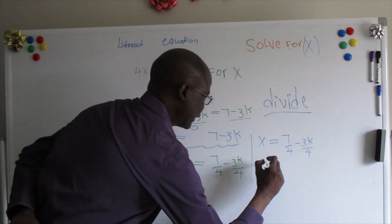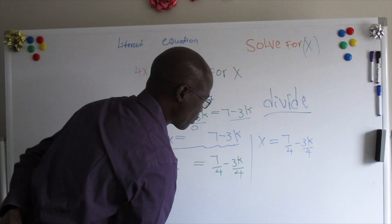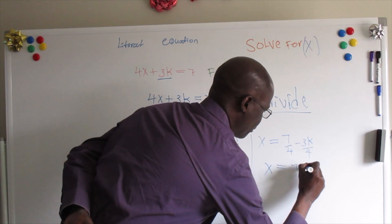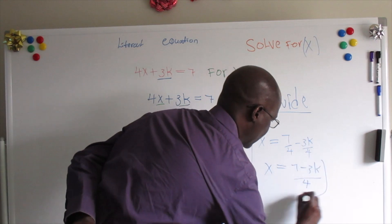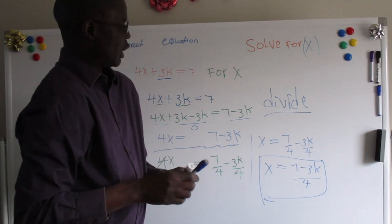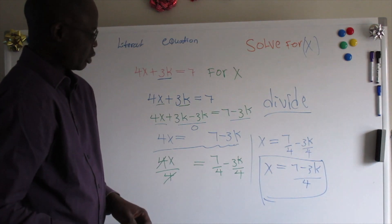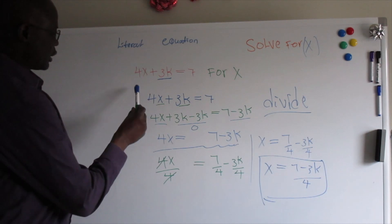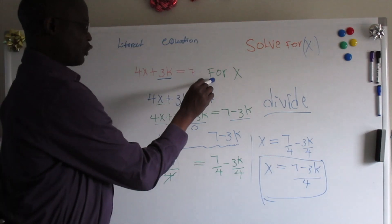We can simplify this to make it x equals 7 minus 3k, the whole thing divided by 4. And that's how we solve when we're trying to find x. Let's go back to see what we had in the first place: 4x plus 3k equals 7, and we solved it for x.